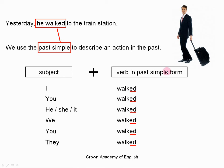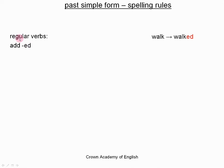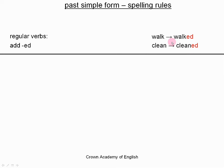Now let us look at the past simple form for other verbs, because not all verbs are regular. The spelling rules for the past simple form: the easy ones are the regular verbs, like 'walk'. So we simply add ED. Walk, walked. Clean, cleaned. Those are just two examples.